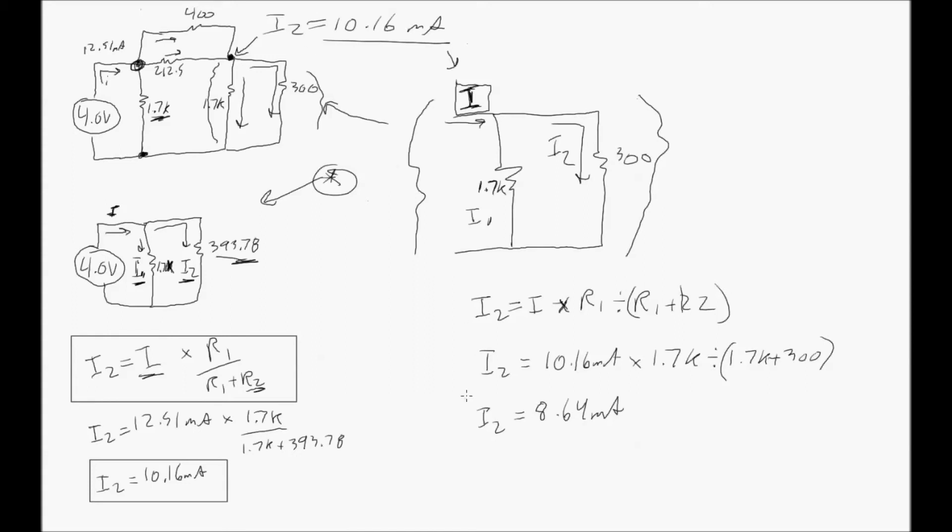You plug in the numbers and you get a new I2 current flowing through the branch which has the 300 ohm resistor. And remember from the question at the very beginning of the video, that was the current that we wanted to find. We wanted to find the current flowing through the 300 ohm resistor.